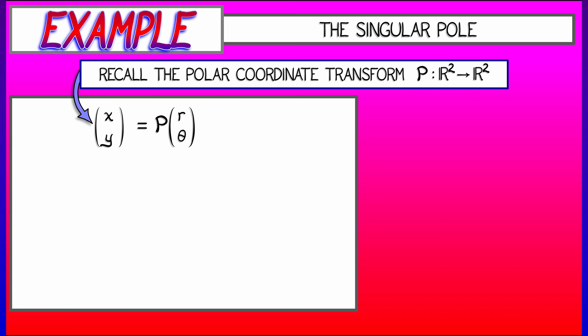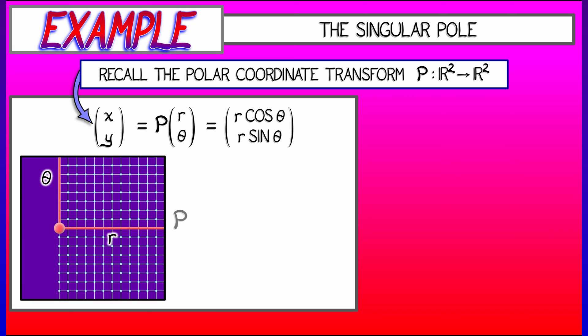and y, and inputs r and theta. And it gives you r cosine theta, r sine theta. That's what's setting up the polar coordinate grid in the plane.